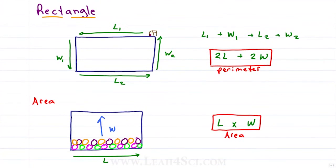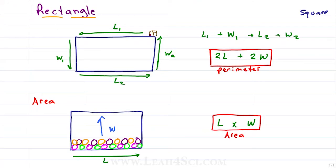Earlier we mentioned that a square is simply a rectangle where the length and the width are the same. So let me show you how you'd adjust the equations. If two times length and two times width gave us the perimeter, and each side of a square is the same, we'd have side 1, side 2, side 3, and side 4. The equation becomes two times the sides that are length plus two times the sides that are width, or simply four times the side.